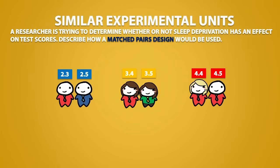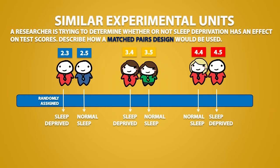For example, the two students with the highest GPAs would be matched up together, and the two students with the lowest GPAs would be matched up together. Then, each pair will be split up and randomly assigned to one of the two treatments. For a pair, one person will get the sleep deprived treatment and the other person will get a normal amount of sleep.